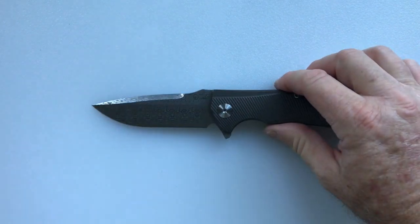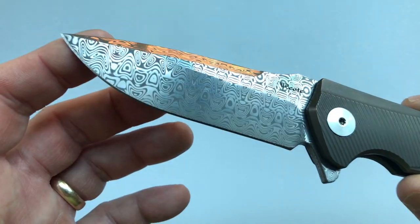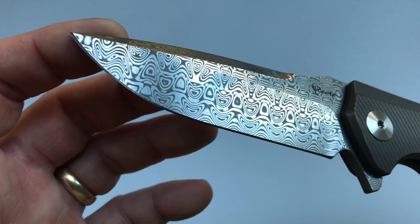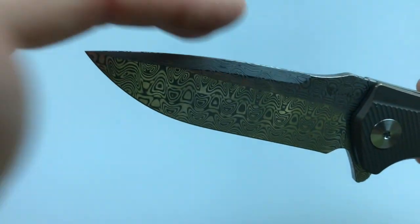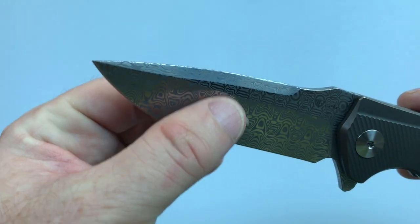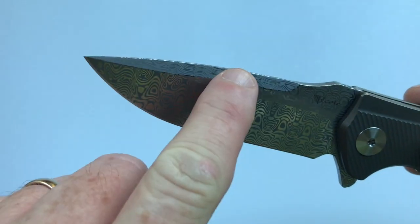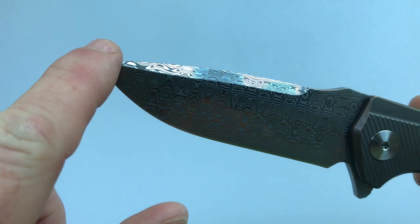The blade on my particular knife is made of damasteel. Usually Riat uses M390 for the other knives. The blade is in a drop point configuration with a high saber grind and it has a top swedge which is notable also.